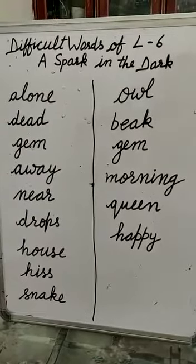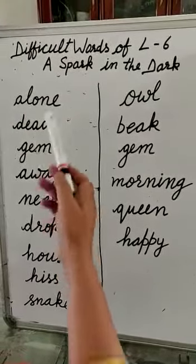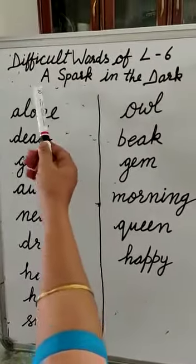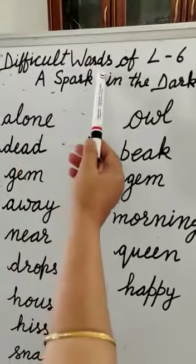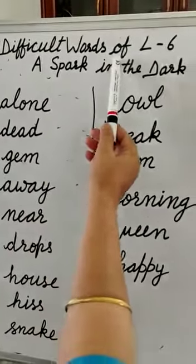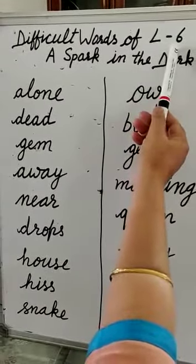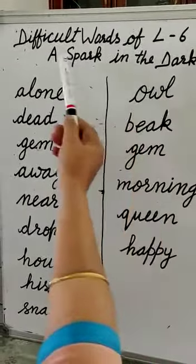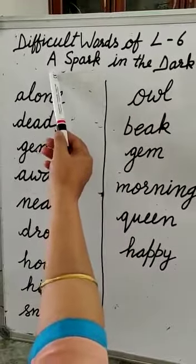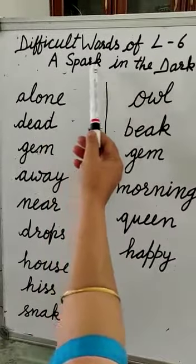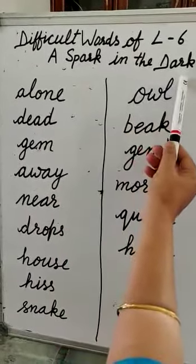Good morning students. Today we will do difficult words of lesson 6. The name of the lesson is A Spark in the Dark.